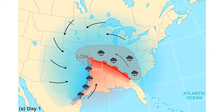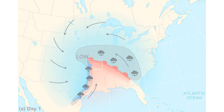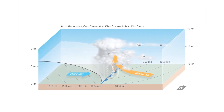At a cold front, however, the heavy, faster-moving cold air mass forces the warm air to rise rapidly. This causes large vertical storm clouds to form and is associated with severe thunderstorms and tornadoes.